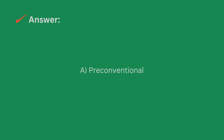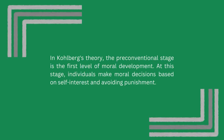The answer is A, pre-conventional. In Kohlberg's theory, the pre-conventional stage is the first level of moral development. At this stage, individuals make moral decisions based on self-interest and avoiding punishment.